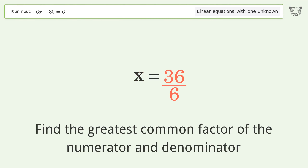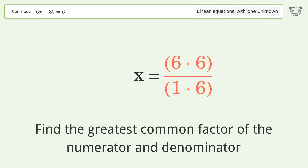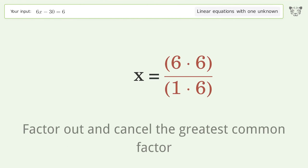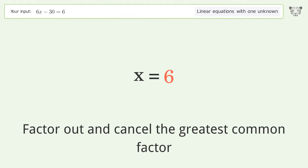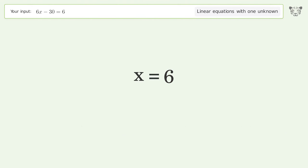Find the greatest common factor of the numerator and denominator, then factor out and cancel the greatest common factor. And so the final result is x equals 6.